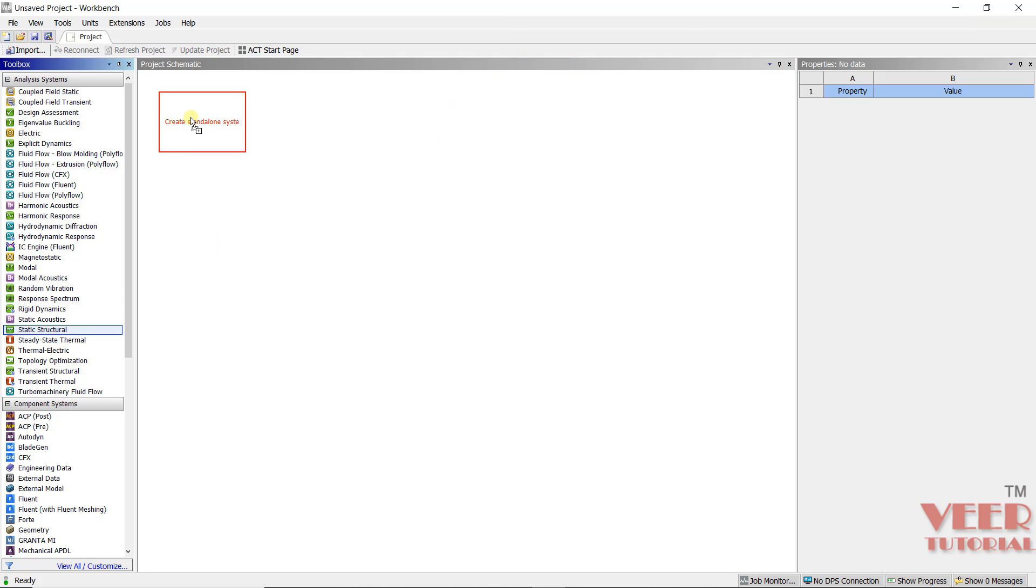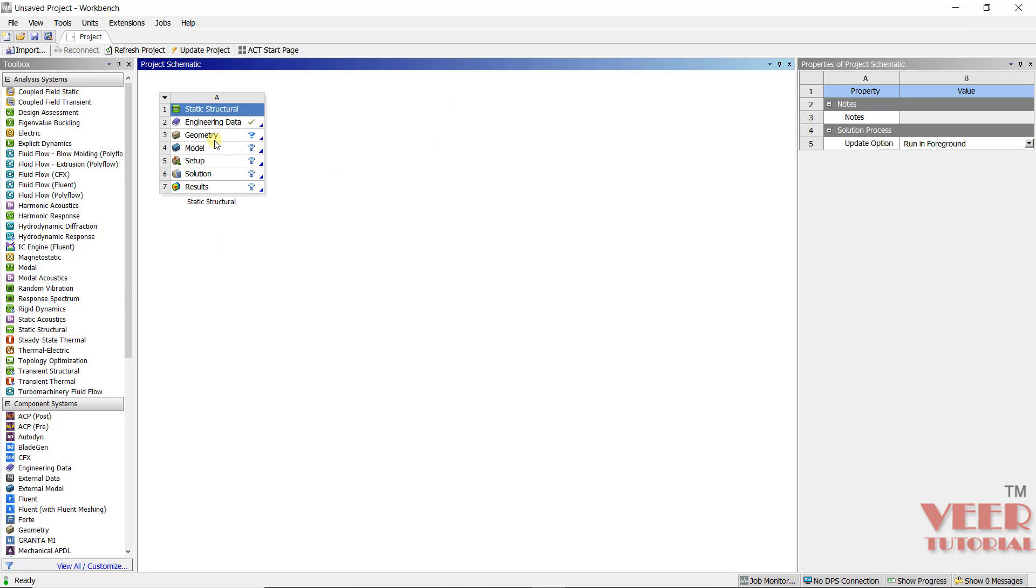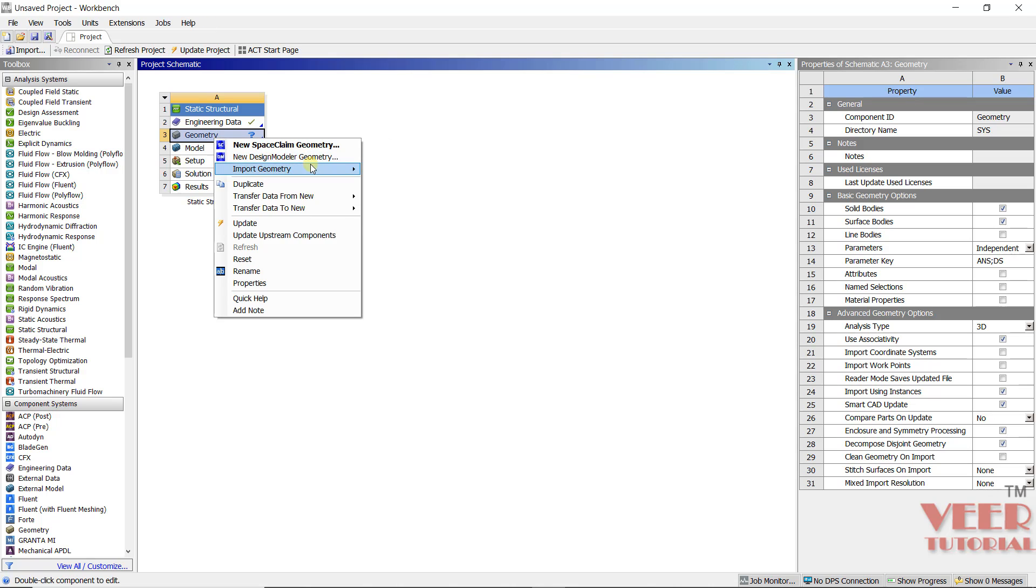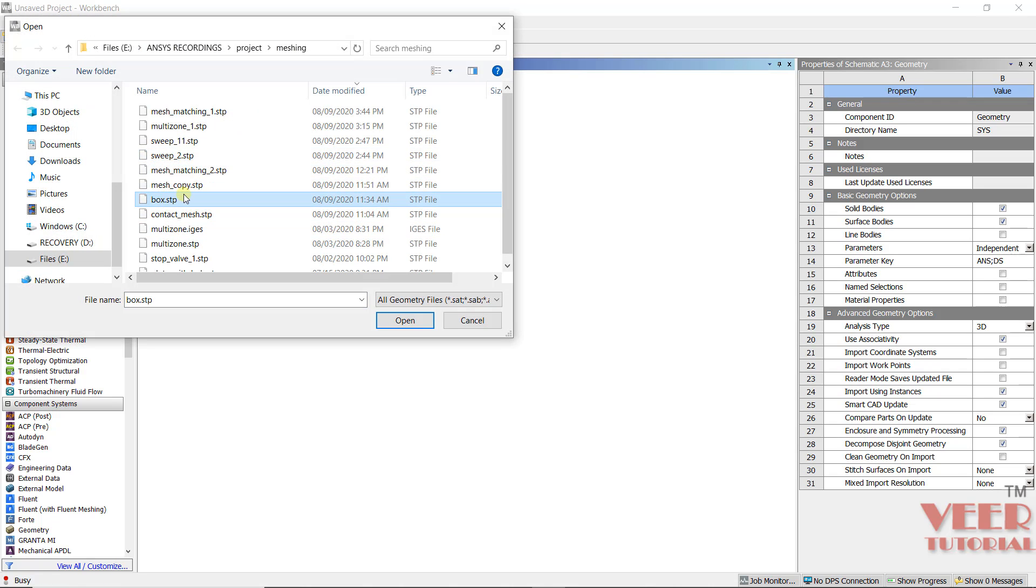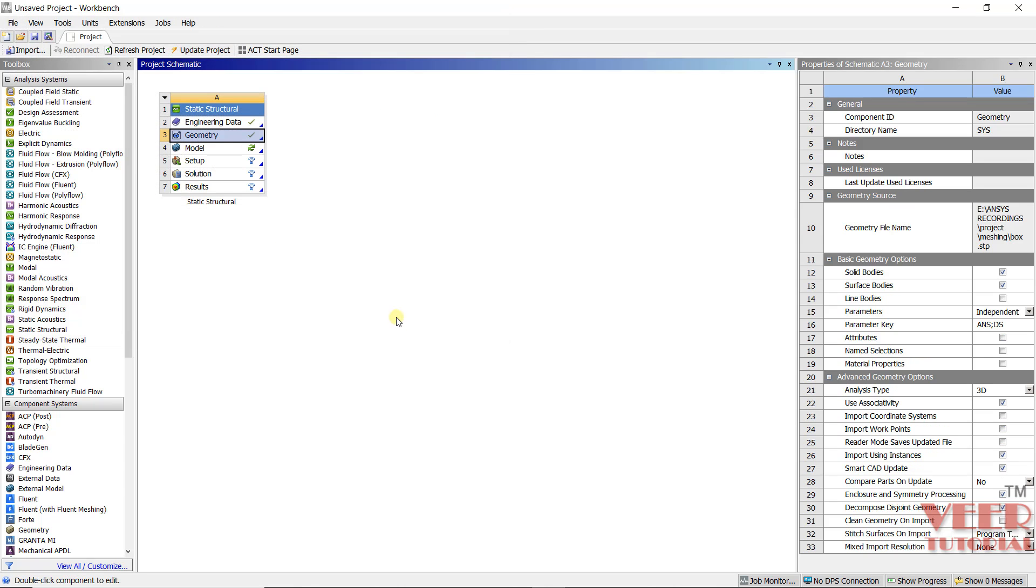So let's say I will pick up this static structure and then I will import the part. I am going to import the part that is box.stp file and then open.